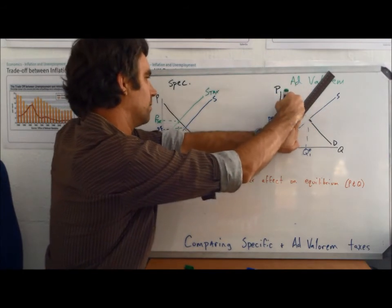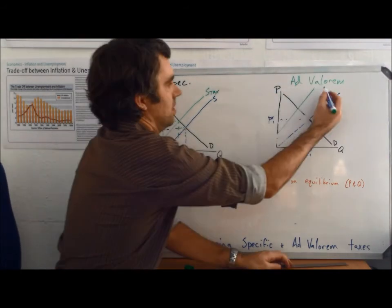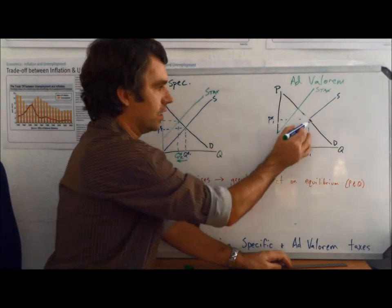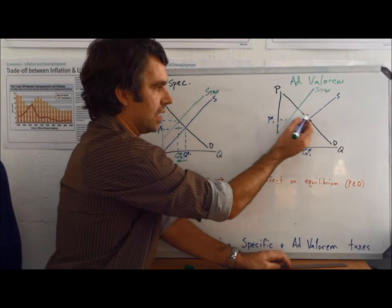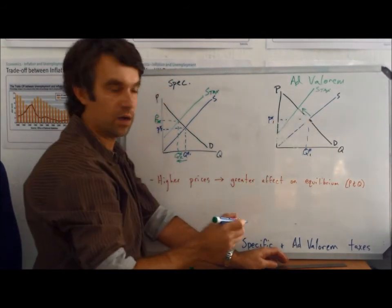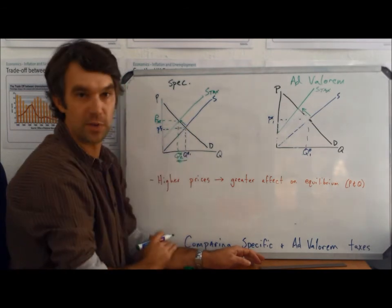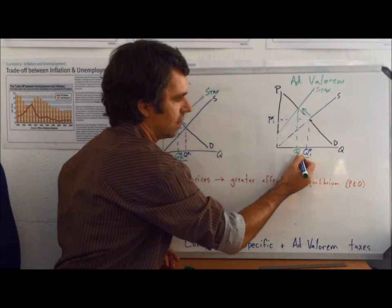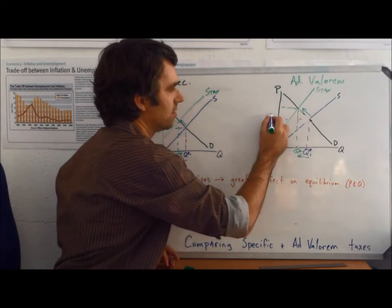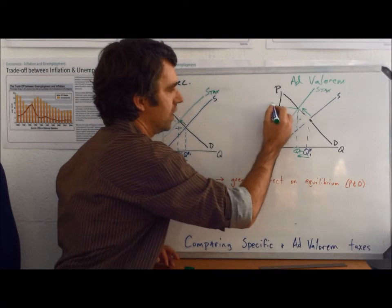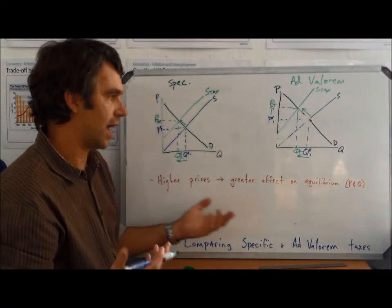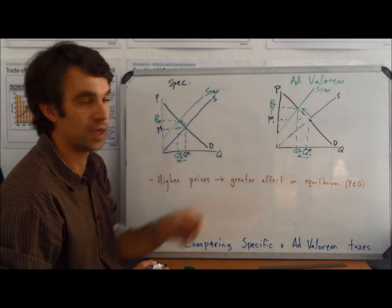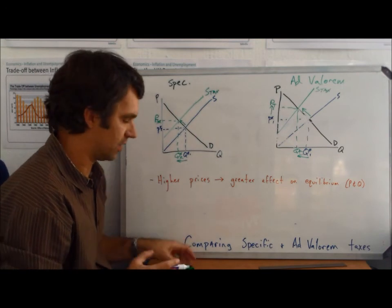So what we should see is that the change in price and quantity should be more significant. The amount that we moved up the demand curve should be greater than the amount we moved up the demand curve with the specific tax. So we should see a greater drop in equilibrium quantity and a bigger increase in equilibrium price after the ad valorem tax.